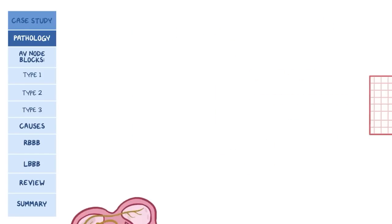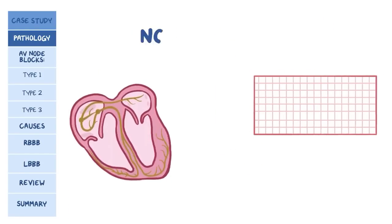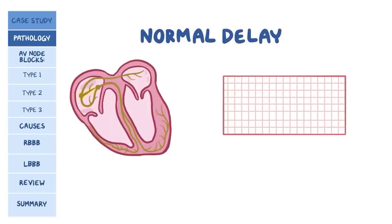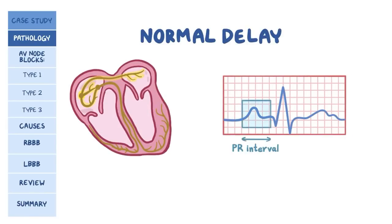On the ECG, the normal delay in the AV node is represented by the PR interval, which is normally less than five small boxes, or 200 milliseconds. There are three main types of AV block.